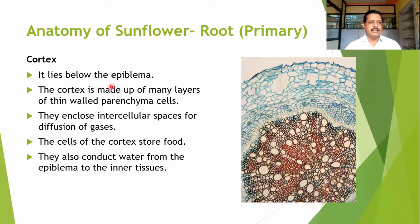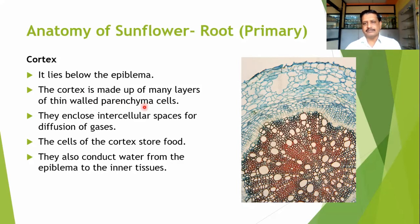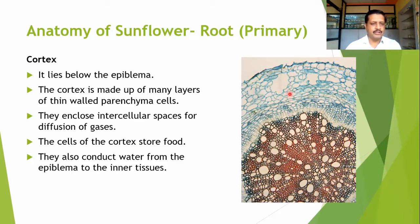This root section can be divided into three zones: the outermost rhizodermis, then cortex, and then the endodermis and pericycle. The cortex lies just below the epiblema outermost layer and is made up of many layers of thin-walled parenchymatous cells that enclose intercellular spaces for the diffusion of gases. The cells of the cortex may store food, making this zone also known as the storage zone. The cortex also conducts water from the epiblema to the inner tissues, supplying the phloem with water and minerals.